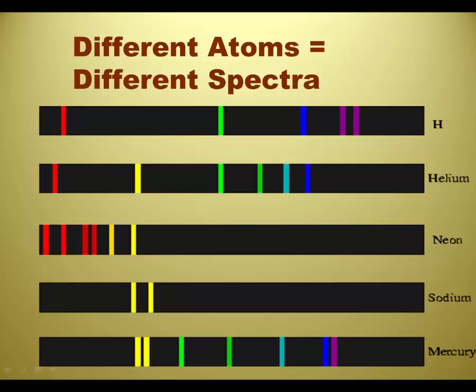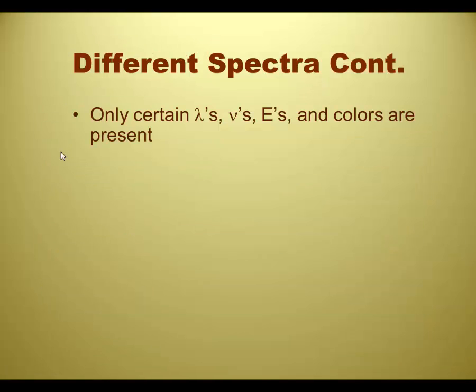The interesting thing is that when you take individual atoms, individual types of atoms, and you get them to emit light, they don't emit a continuous spectrum. They emit very small portions of a spectrum. Very specific wavelengths, very specific colors. So hydrogen, the top one there, is one of the ones that we'll wind up looking at in the lab. And helium too. You'll notice that they look different from each other. They're almost like fingerprints of these elements. You can actually distinguish each atom from the other based on what their spectra looks like.